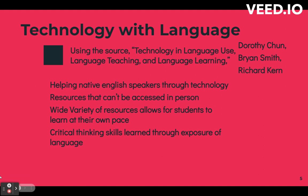In my next paragraph, I speak about how technology is more aligned with language and its accessibility variations. I use the source Technology and Language Use: Language Teaching and Language Learning by Dorothy Chun, Brian Smith, and Richard Kern. This article provides reasoning and facts that demonstrate the positive effects of learning the English language using technology. Examples include being exposed to so much English on the web, allowing more areas to learn — from articles and websites to videos with subtitles. This familiarity builds mental abilities that help develop capacity for multitasking and learning.